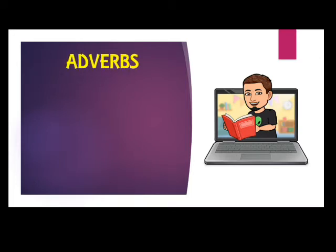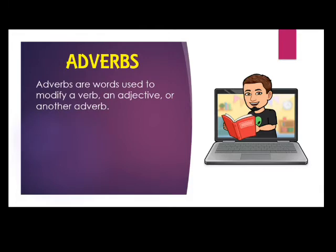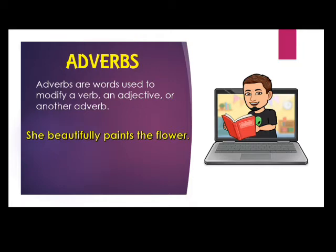The lesson is adverbs. Adverbs are words used to modify a verb, an adjective, or another adverb. For example: she beautifully paints the flower. In a normal sentence, we identify the three main parts — the subject, the verb, and the object — or in short, the SVO sentence structure. Let's find out the SVO in the example. The subject, or the one being talked about, is the word 'she' — the pronoun she.